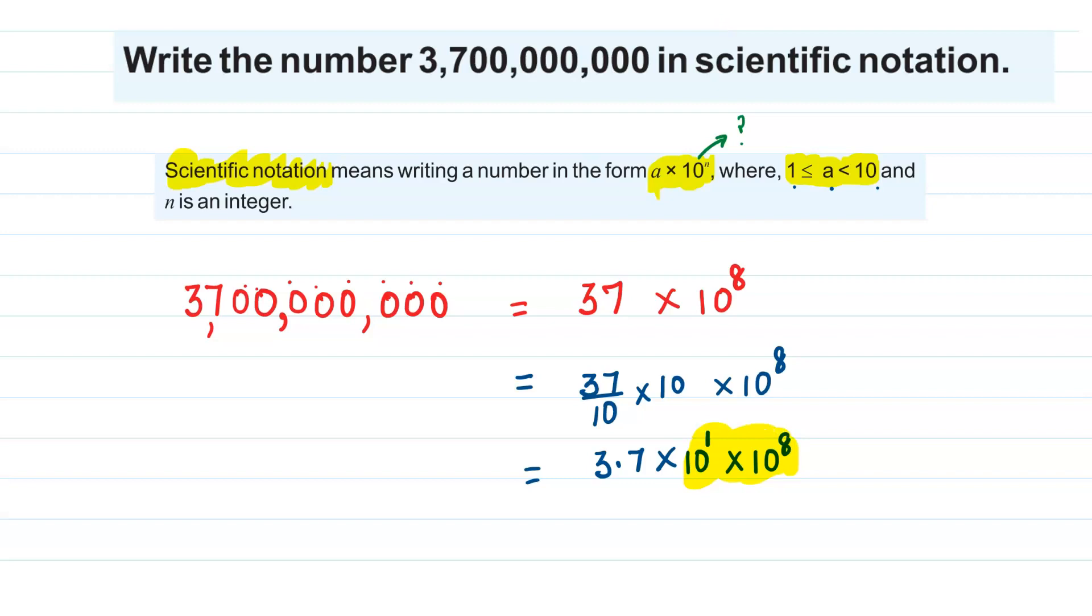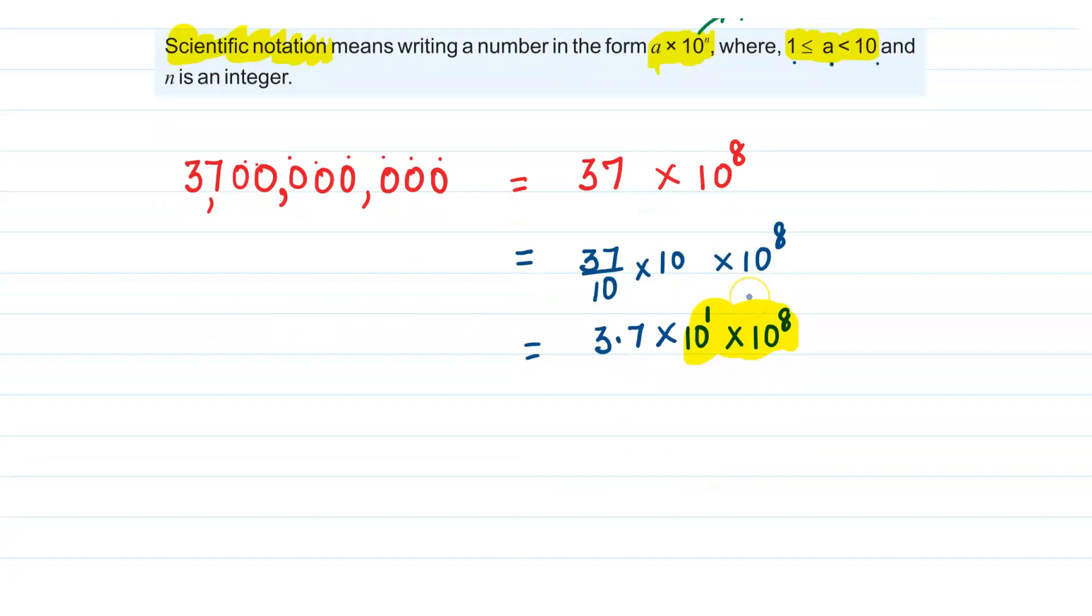Now if you look at these two, the base is 10 and the powers are 1 and 8. So the powers can be added and we can write this as 10 raised to power 1 plus 8, which is 3.7 × 10^9.